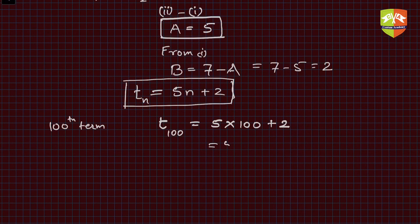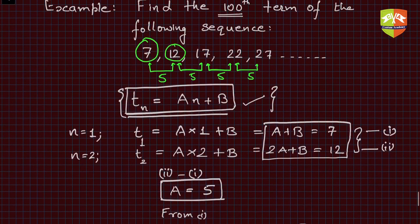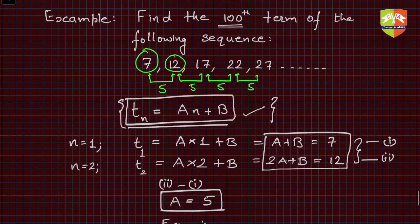Once again, the underlying philosophy of this question is: you have to see that if the consecutive terms are having the same difference, then the nth term can be written as An + B. From the known values of t1, t2, find out the values of A and B.